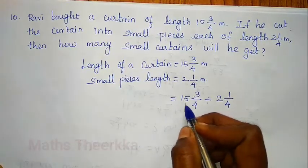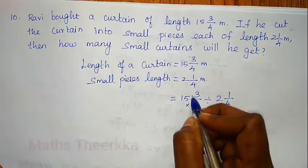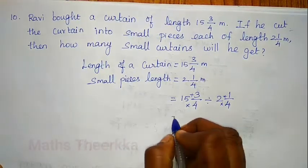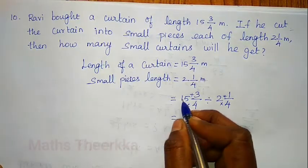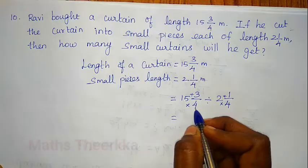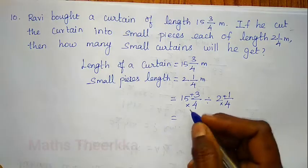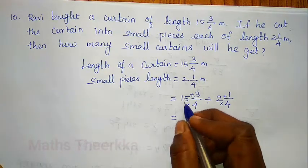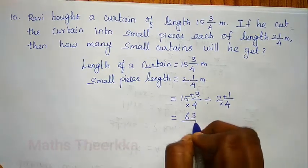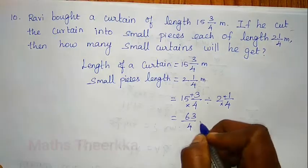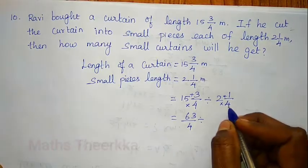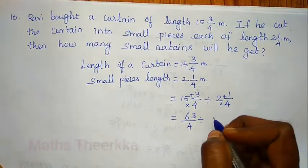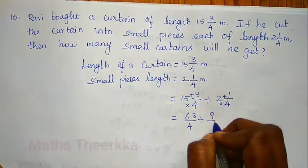We divide the fractions. First, convert to improper fractions: 15 into 4 = 60, 60 plus 3 = 63 by 4. Then 2 into 4 = 8, 8 plus 1 = 9 by 4. So we have 63 by 4 divided by 9 by 4.